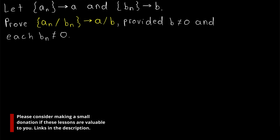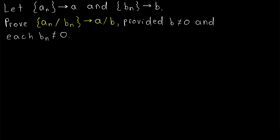We've proven that convergent sequences and their limits behave very nicely with respect to addition, subtraction, multiplication, and even being multiplied by a constant. Now we've got one more thing to prove. We'll prove that if the sequence an converges to a and the sequence bn converges to b, then the sequence an over bn converges to a over b, provided that b is not equal to 0 and each bn is not equal to 0. Because if b is 0, then a over b is undefined, and if any bn is equal to 0, then this sequence is undefined.